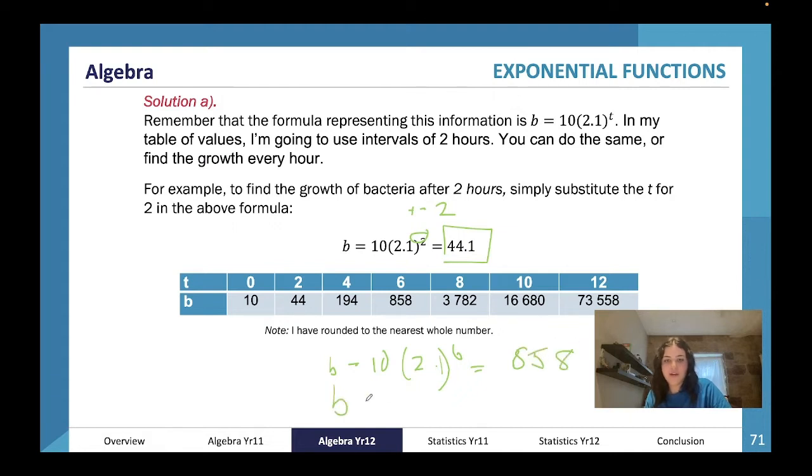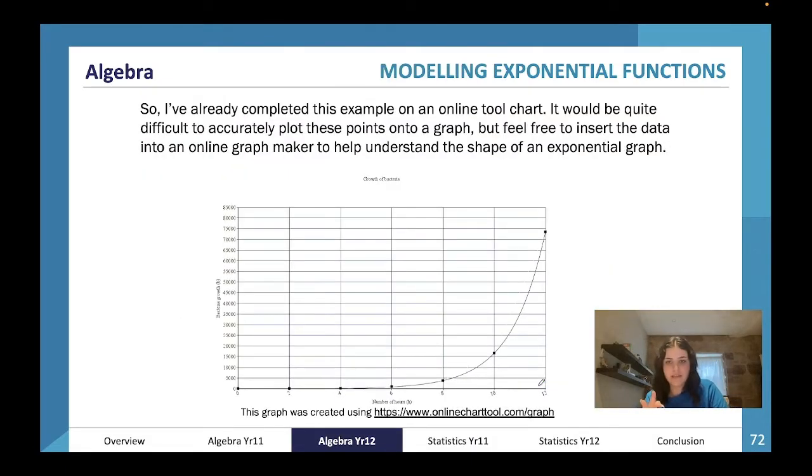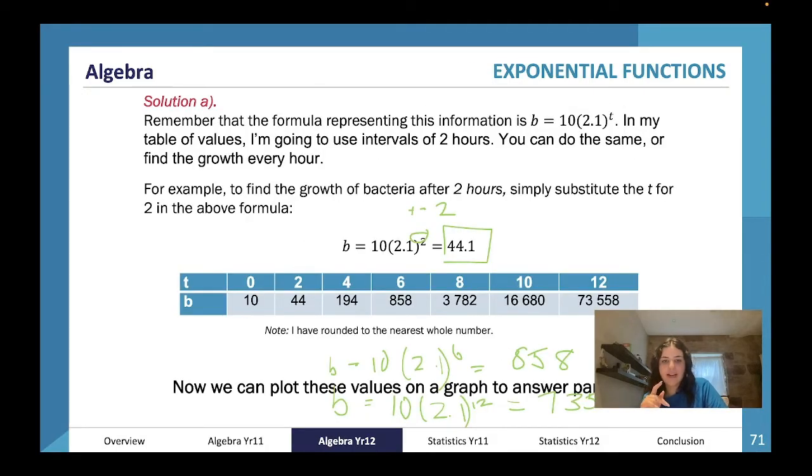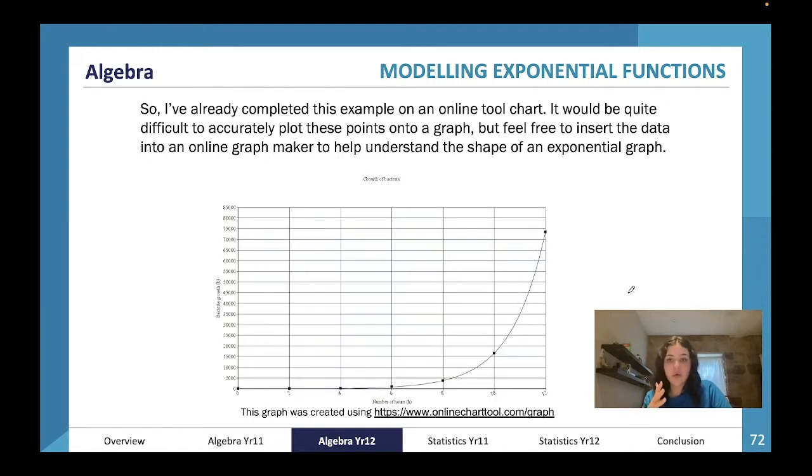If you want to do it for 12 hours, b = 10(2.1)^12, which equals 73,588. Now we plot these values on a graph to answer the second part. This was done online to make it really easy to understand. It would be difficult to accurately plot these points because we start with 10 and we're at 76,000. Practically, you can insert the data into an online graph maker to help you understand the shape, but they're not going to give you questions that you can't plot.